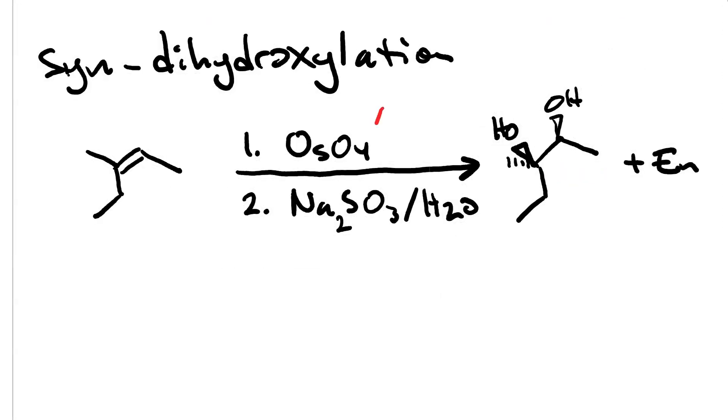One way to do this involves using a stoichiometric amount of osmium tetroxide followed by sodium sulfite in water. This is bad. Osmium tetroxide is toxic and we are using a stoichiometric amount. That means that we are releasing a bunch of OsO4 into the environment.